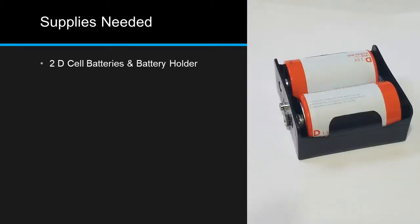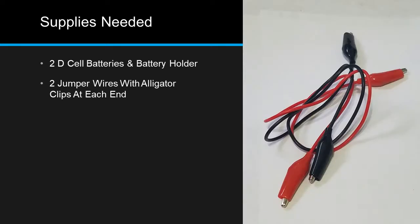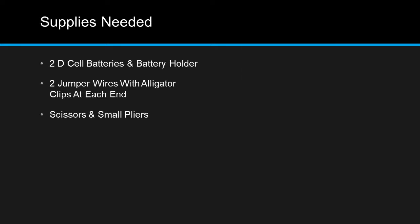Two D-cell batteries and a battery holder, two jumper wires with alligator clips at each end. And just like in many of our projects, you'll be needing your scissors and small needle-nose pliers again. Well, that's about it for supplies. Let's get building.